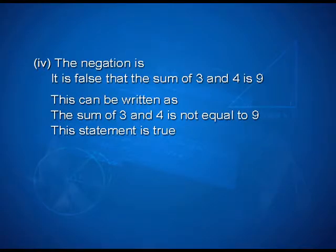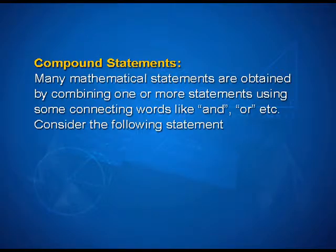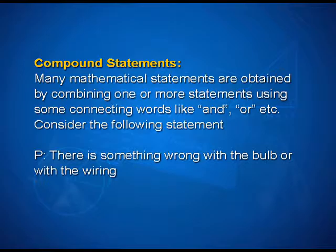Third, the negation of the statement is: it is false that every natural number is greater than 0. This can be rewritten as: there exists a natural number which is not greater than 0. This is a false statement. Fourth, the negation here is: it is false that the sum of 3 and 4 is 9. This can be written as: the sum of 3 and 4 is not equal to 9. The statement is true.